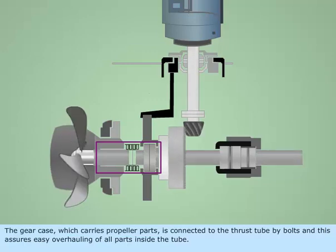The gear case, which carries propeller parts, is connected to the thrust tube by bolts and this assures easy overhauling of all parts inside the tube.